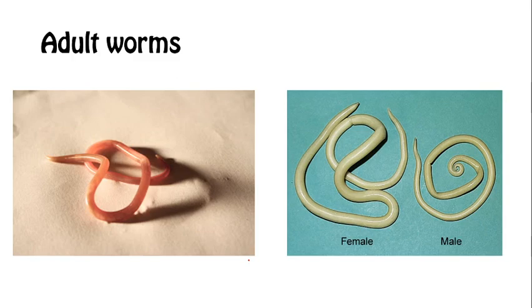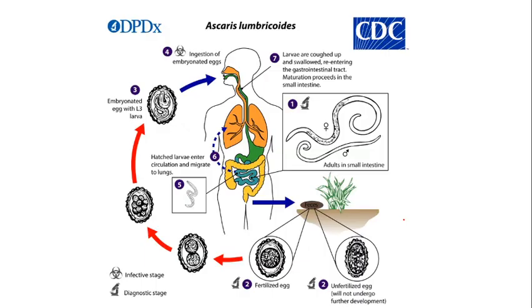We can see that the unfertilized eggs are longer than the fertilized eggs, but with a thinner shell and mainly possess masses of refractile granules. Let's move on to the adult worms. These worms have a very distinct appearance — their color ranges from creamy white to pink. The female is much bigger in size. Also, the morphology of their tails differs: the female tail is straight, while the male has a slight curvature.